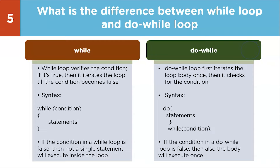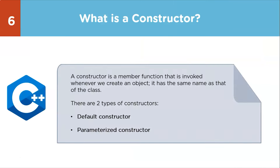The sixth question: what is a constructor? A constructor is a member function invoked whenever we create an object; it has the same name as the class. There are two types: default constructor and parameterized constructor. If no constructor is defined, the compiler automatically provides a default constructor. A parameterized constructor allows passing arguments during object creation.